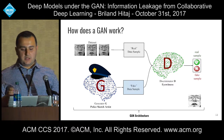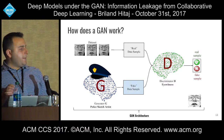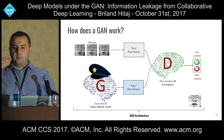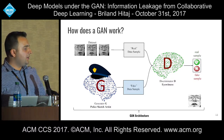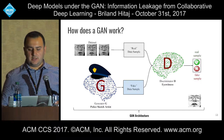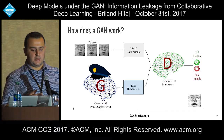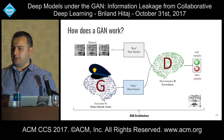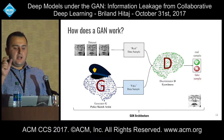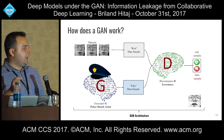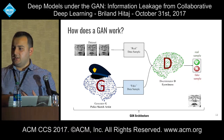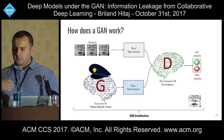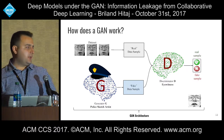After many iterations, the generator becomes good enough to produce samples that are look-alikes of the underlying distribution of the training data. We see it like an eyewitness who has witnessed a crime and a police sketch artist: the sketch artist draws a sketch of the potential criminal, and based on feedback from the eyewitness modifies the sketch until it potentially looks like the criminal.